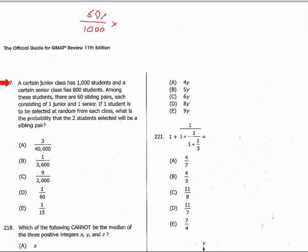If we've selected one of the sibling pairs, it's not good enough to just select any one of the 60 people who are also part of a sibling pair. We've got to select the one who is a member of the senior class and who is the sibling of the person we selected first. So the odds are not 60 out of 800 — the odds are only 1 out of 800, because we're selecting the specific sibling of the person we first selected.